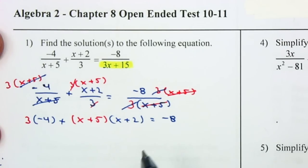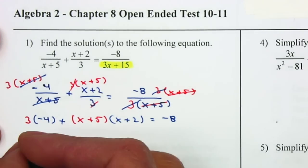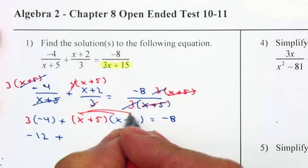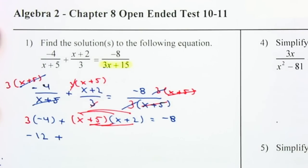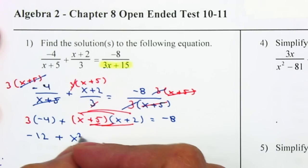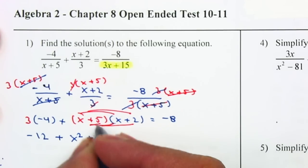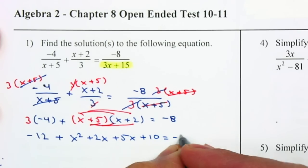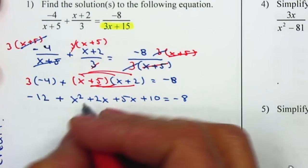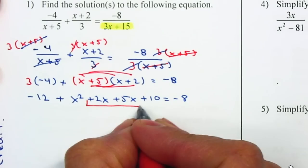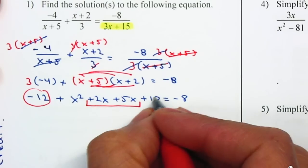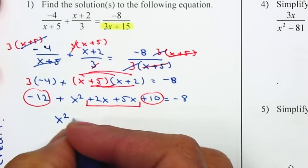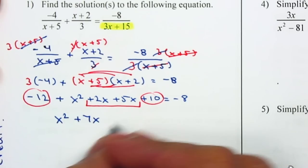From here we just have an equation to simplify. 3 × (-4) gives me -12. I use the distributive property to expand: x × x gives x², x × 2 gives +2x, 5 × x gives +5x, 5 × 2 gives +10. Combining like terms: x², 2x + 5x = 7x, and -12 + 10 = -2.